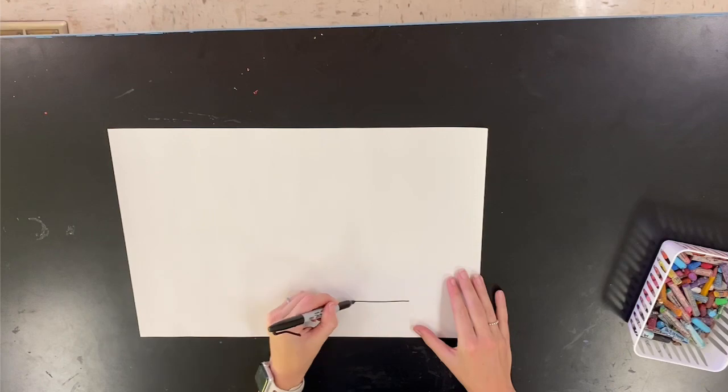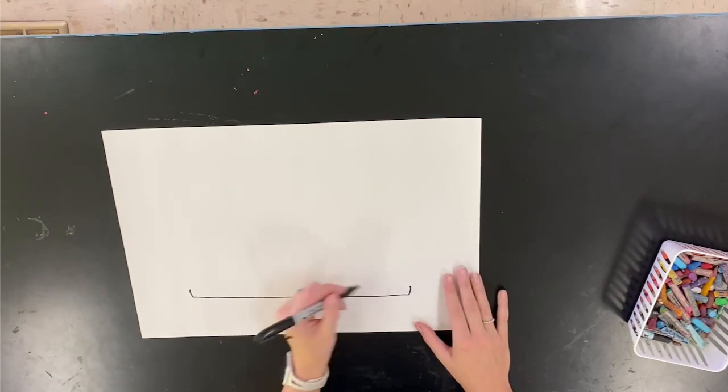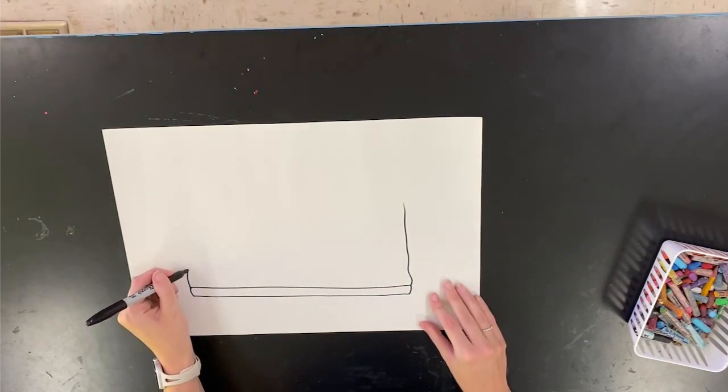The first thing we need to do is grab all of our supplies and I'm going to start at the bottom with a line determining how long my shoe is going to be. And then put little hooks on each end and connect those hooks together to create the sole of my shoe.